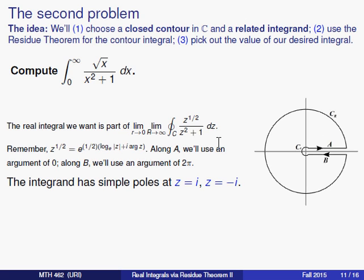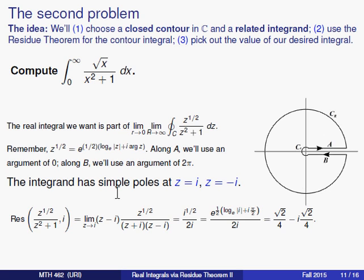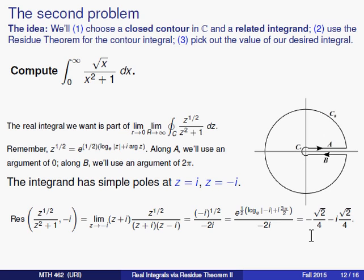The integrand has a pole at positive i and at minus i, that's where the denominator is equal to zero. Both of those poles will be enclosed by the contour as capital R gets a little bit larger, so we're going to find the residue at each of those. Now they are simple poles so I can find the residue at each by just multiplying by z minus the value of the pole, taking the limit as z approaches that pole, and once we evaluate that we'll end up with square root of 2 over 4 minus i square root of 2 over 4 for the first residue and for the residue at minus i we'll get almost the same thing, minus square root of 2 over 4 minus i square root of 2 over 4.